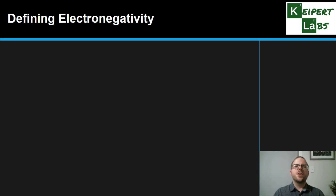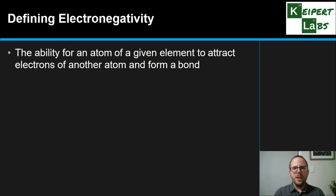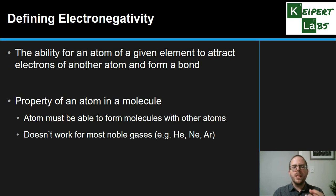When we use this term electronegativity, we're referring to the ability for an atom of a particular element to attract the electrons of another atom and form a bond. It's essentially this attraction of an atom for other electrons. But one thing that's important is that it occurs as a property of an atom when it's connected to another in a molecule. So in order for us to be able to determine the electronegativity of something, it must be able to form molecules with other atoms. Otherwise we can't do it.